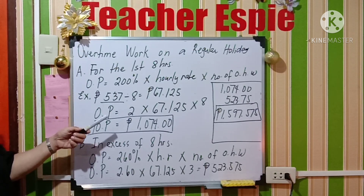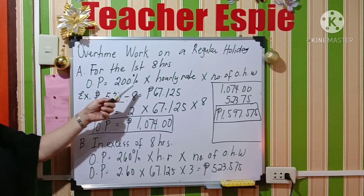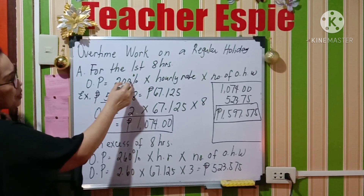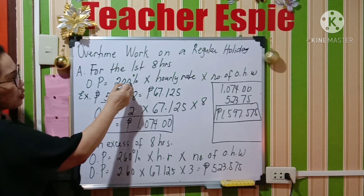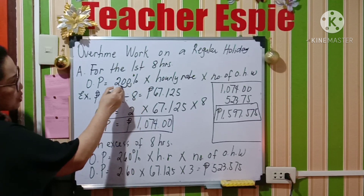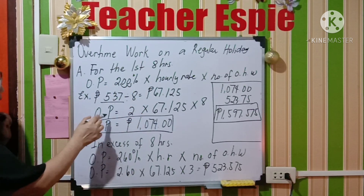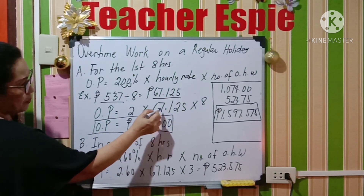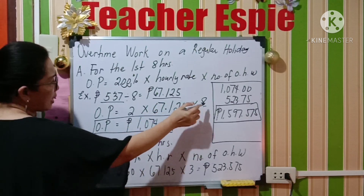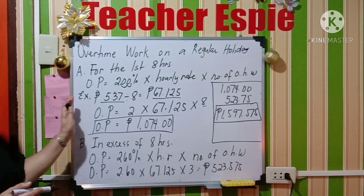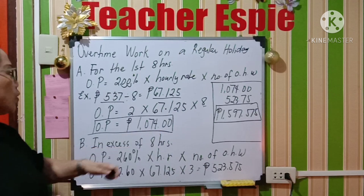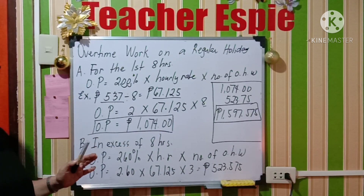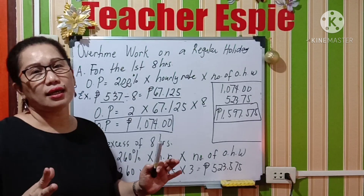For the first eight hours during a regular holiday, the formula is: overtime pay equals 200% times hourly rate times number of hours worked. When converting percent to decimal, move two places to the left, so 200% becomes 2.00. That is 2.00 times 67.125 times 8 hours, which gives you 1,074 pesos. That is the salary you will receive for the first eight hours on a regular holiday.